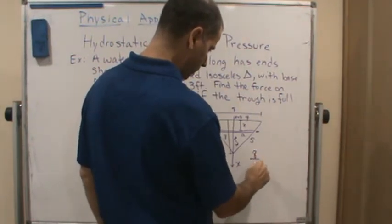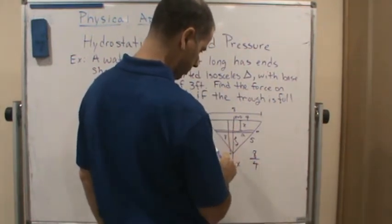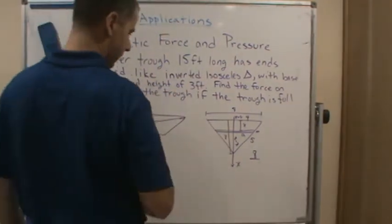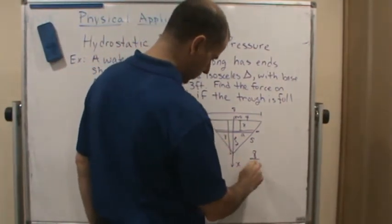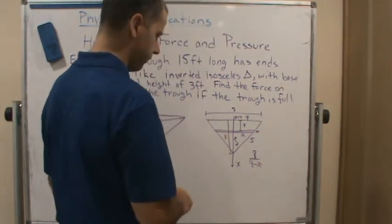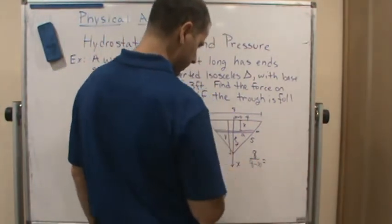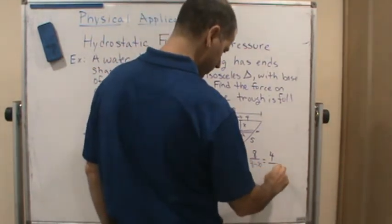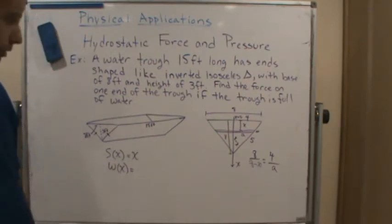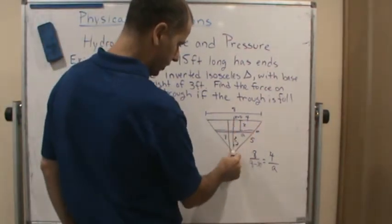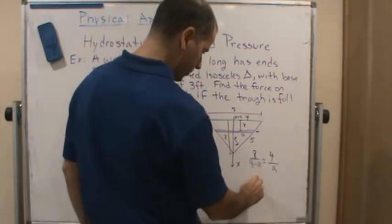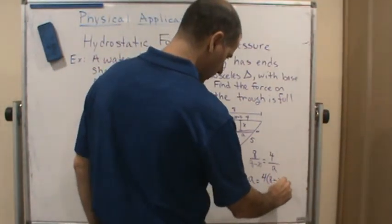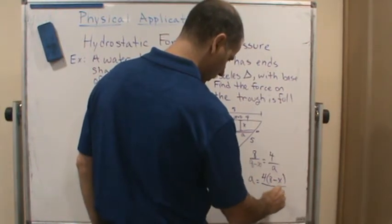8 goes with 4, right? We could do it that way. So 8, this side corresponds to this side, so we're going to get 8 minus x, x is equal to 4 over a. So now we want to represent a because that's what's going to change as we go on. So let's solve a in terms of x. So then if we do that, we get a equals 4 times 8 minus x over 8.